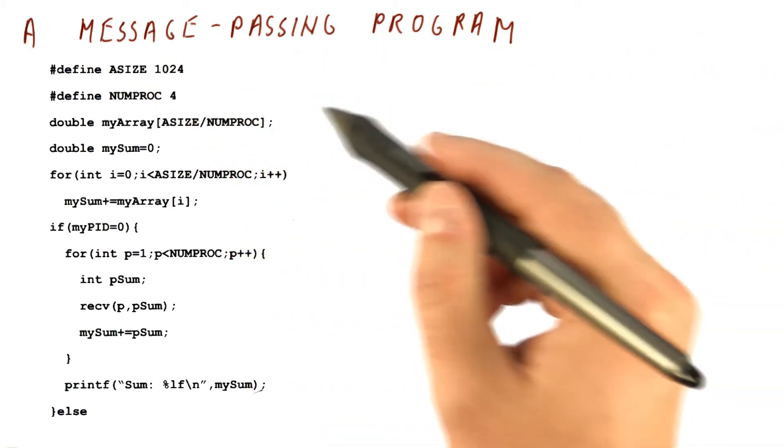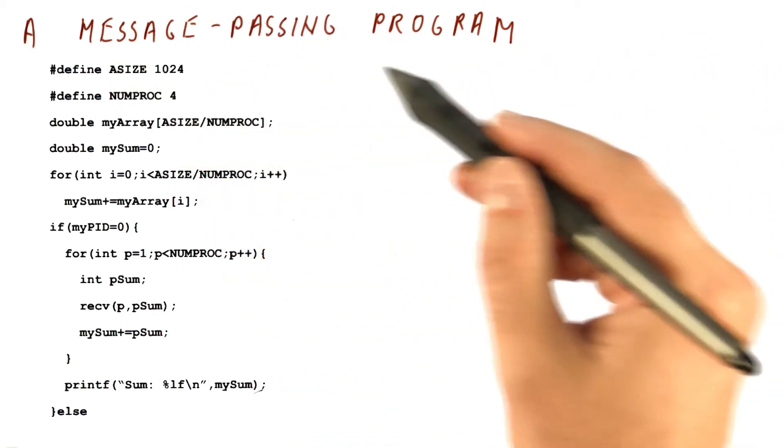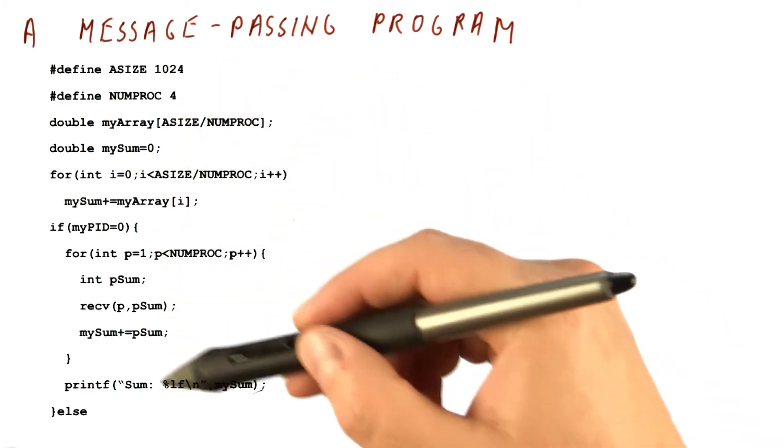So to see what the programmer has to go through, let's look at the message passing program. This is a relatively simple program.